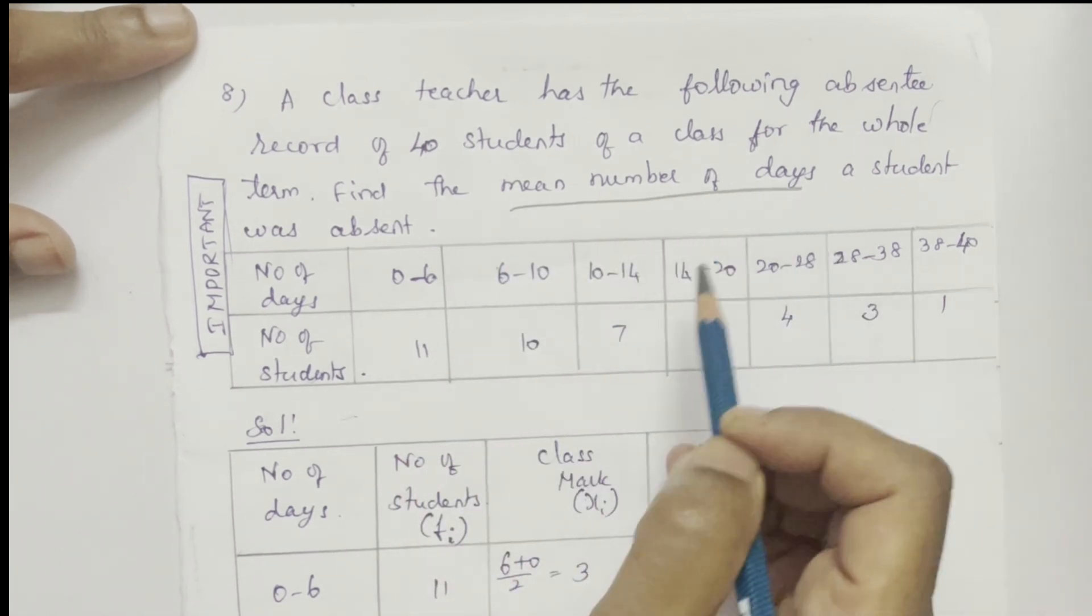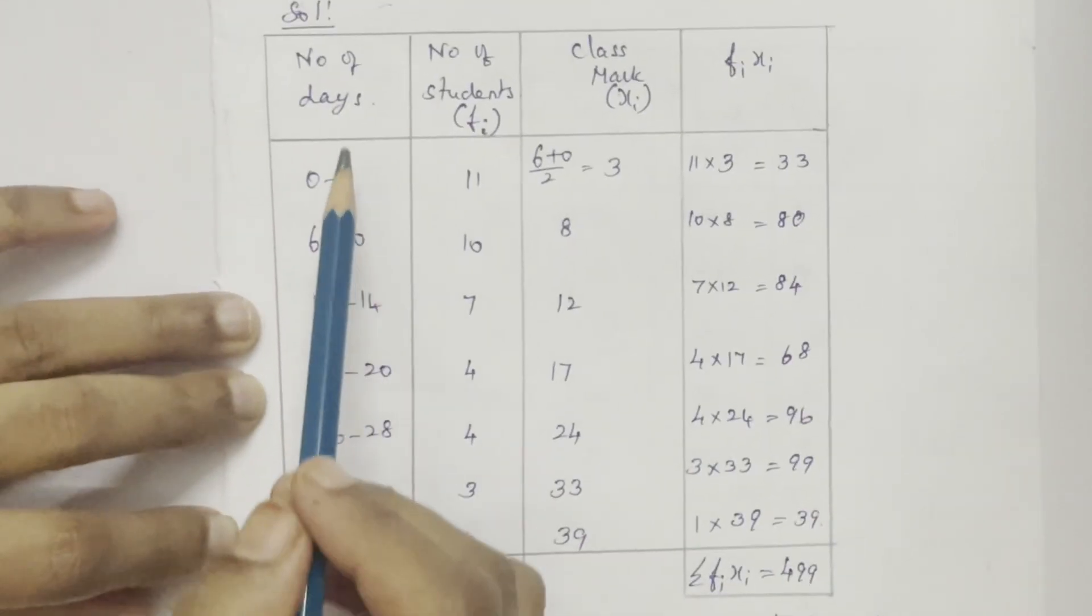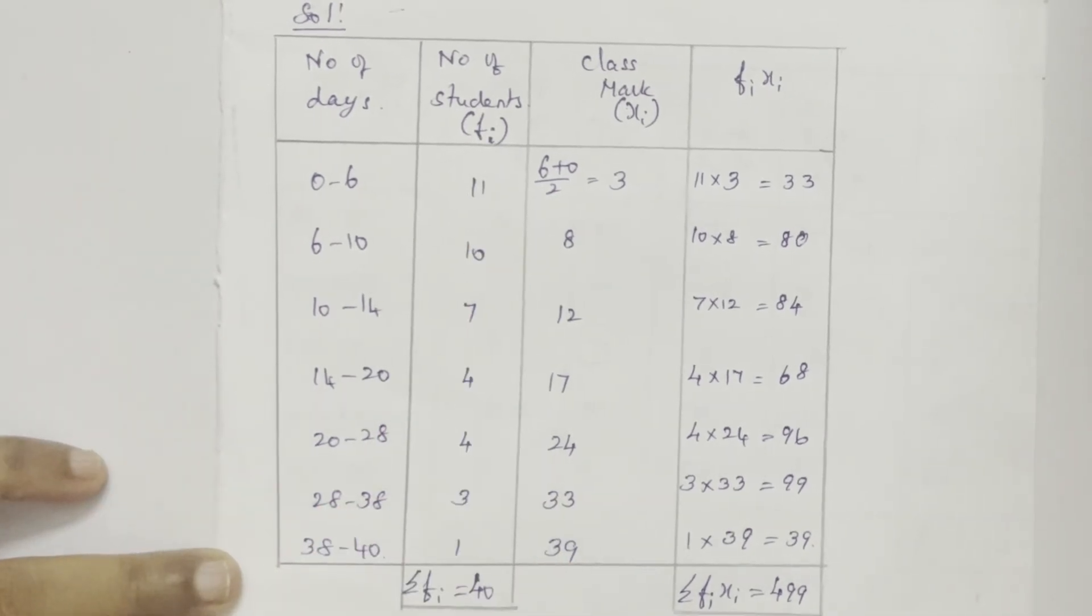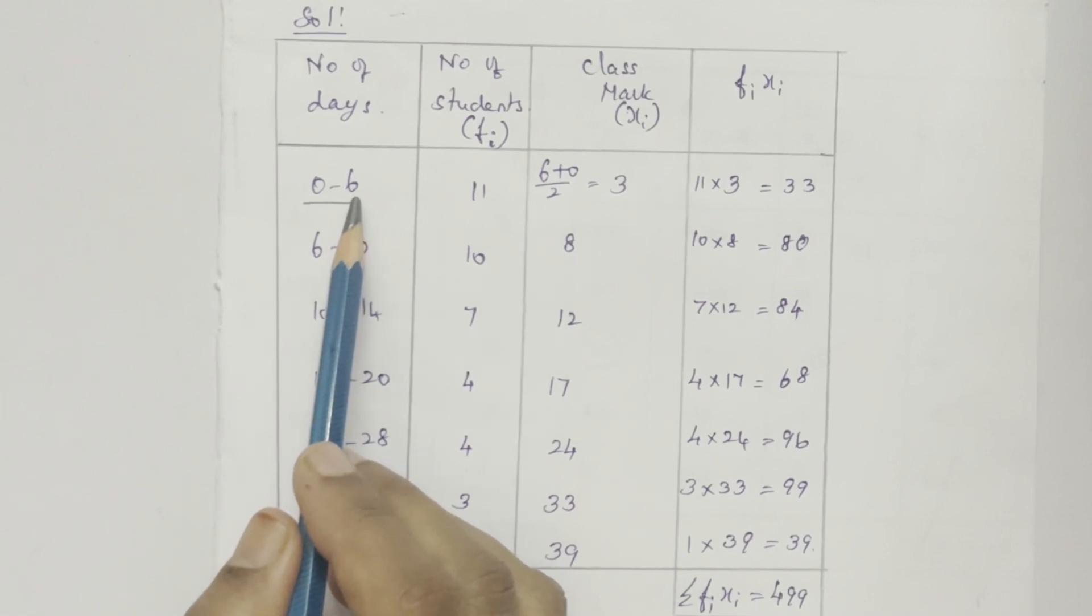So I have written the number of days here and number of students, that is fi. Look at the intervals here. The size of the interval, that is class size, 6 minus 0 is 6.